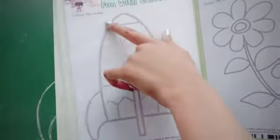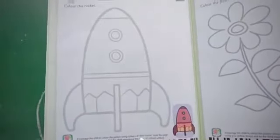You can see this picture in your book. Color the rocket. Page number 4.